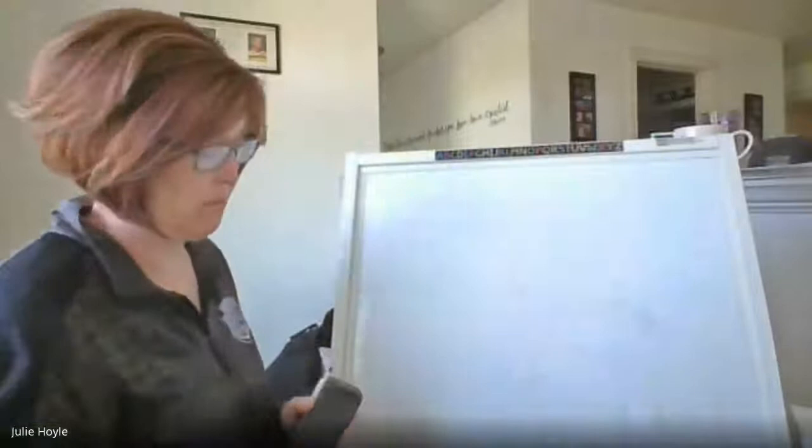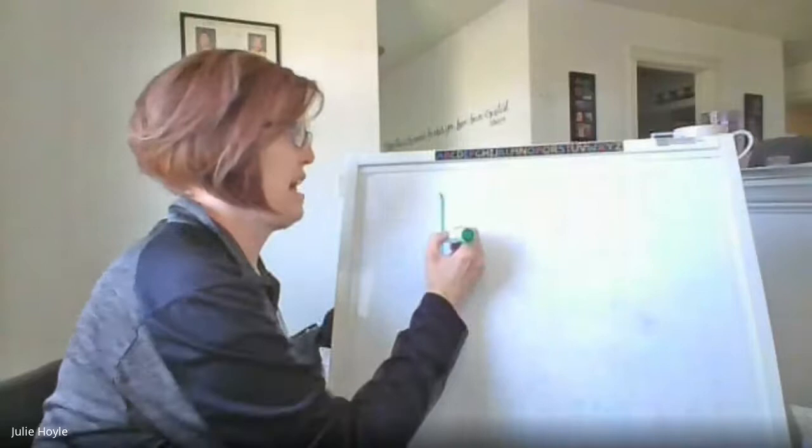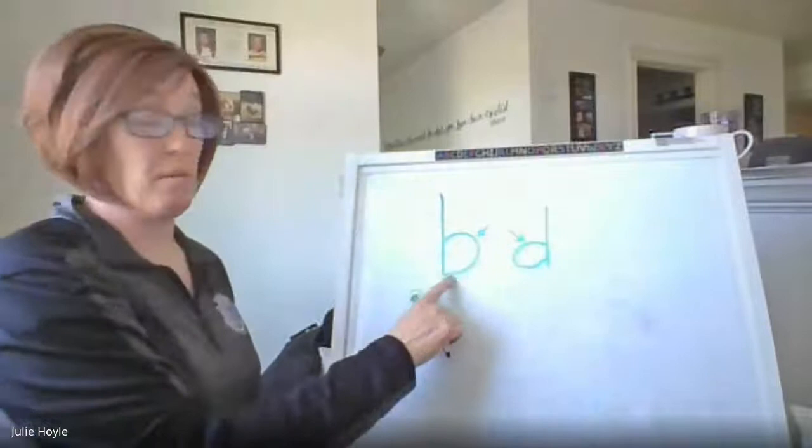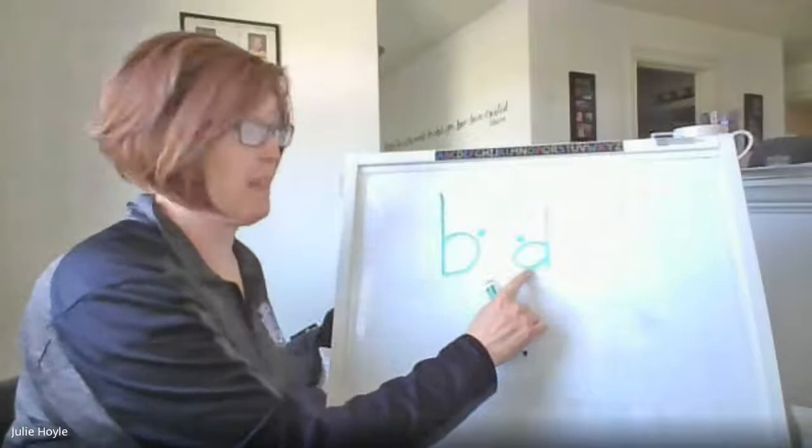And finally, one of my favorites that I think kids really remember is that b has a belly out front while d wears a diaper in the back. So if the bump is on the front, that's the belly, that's the b. If the bump is on the back, that's the diaper out back. B wears a belly in the front, d wears a diaper out back.